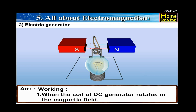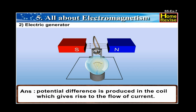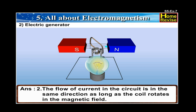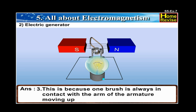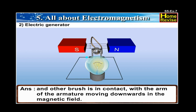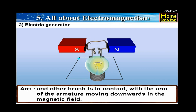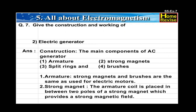Working: 1. When the coil of the DC generator rotates in the magnetic field, a potential difference is produced in the coil, which gives rise to the flow of current. 2. The flow of current in the circuit is in the same direction as long as the coil rotates in the magnetic field. 3. This is because one brush is always in contact with the arm of the armature moving upward, and the other brush is in contact with the arm of the armature moving downward.